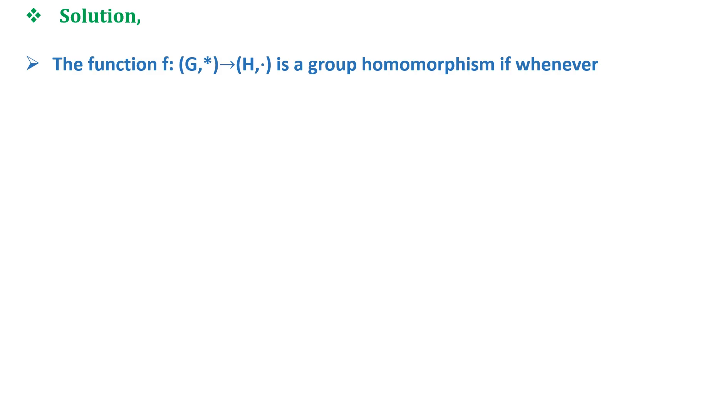The function f from (G, *) to (H, ·) is a group homomorphism if whenever a * b = c, then f(a) · f(b) = f(c).